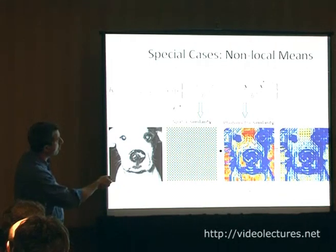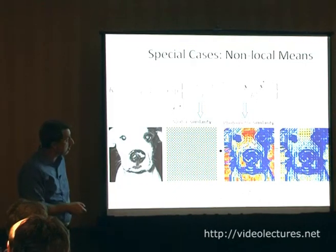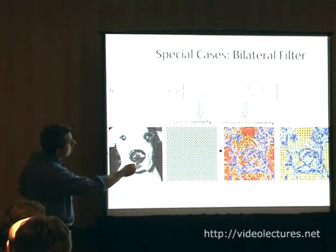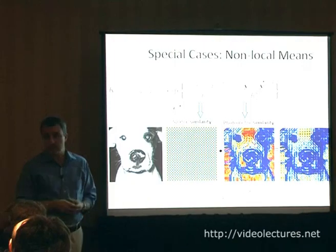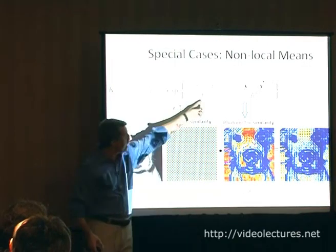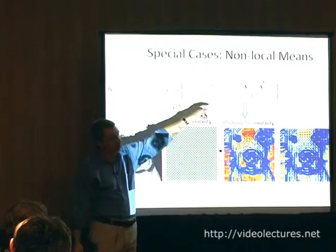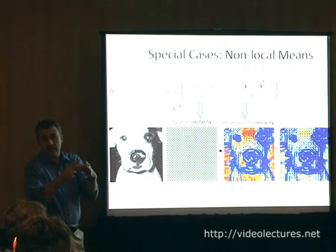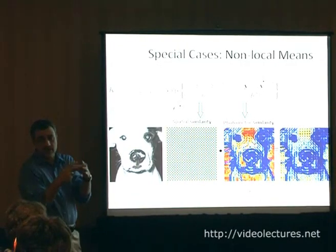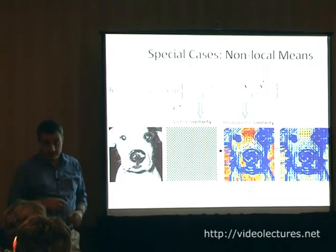If you go to non-local means, which has made a big splash in our community in the last few years, the difference is really minor. The only thing that's changed is that instead of taking pixel-wise differences, you take the differences between two patches centered at that pixel. Also, you let the spatial bandwidth h_x go to infinity, which is what makes it non-local. If h_x is a small number, the weights are large only in a small spatial area around the pixel; if you let it go large, then you're looking all over the image.